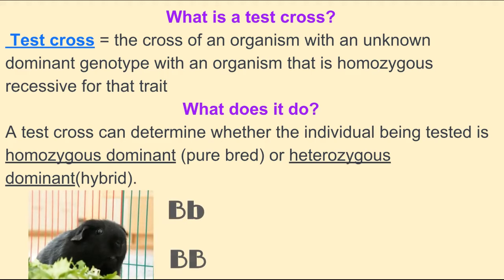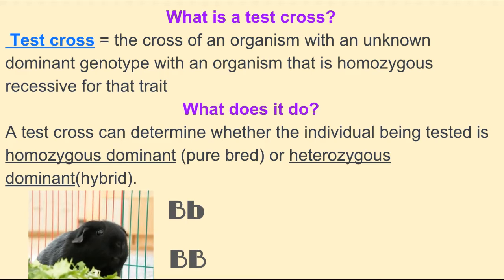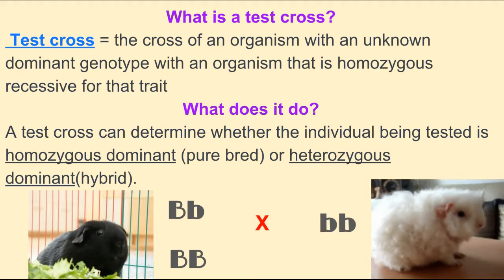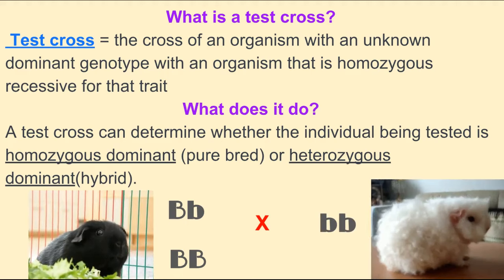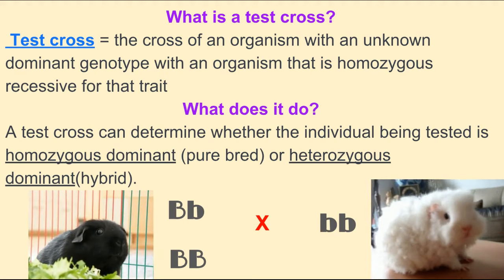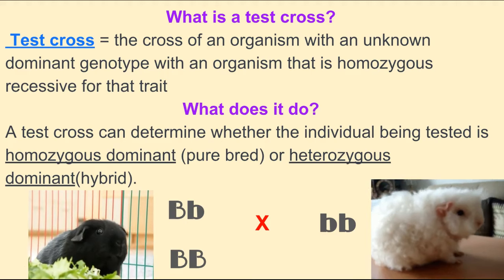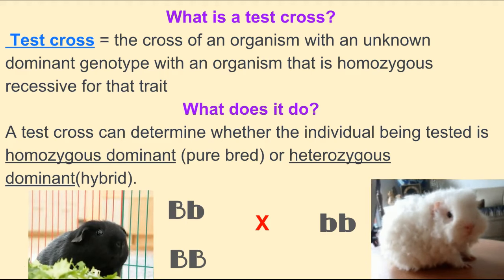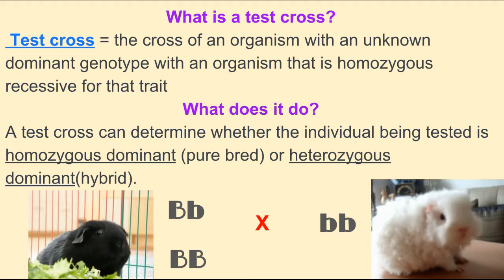Here's an example with our black guinea pig. Black is the dominant color in guinea pigs for fur, and we don't know if the genotype is heterozygous or homozygous dominant. We would take this guinea pig and mate it with a female guinea pig that has the homozygous recessive trait — in guinea pigs, this would be a white guinea pig. We would give them a little privacy, hope the female becomes pregnant, and wait for the baby guinea pigs to be born, then look at the offspring from this cross.